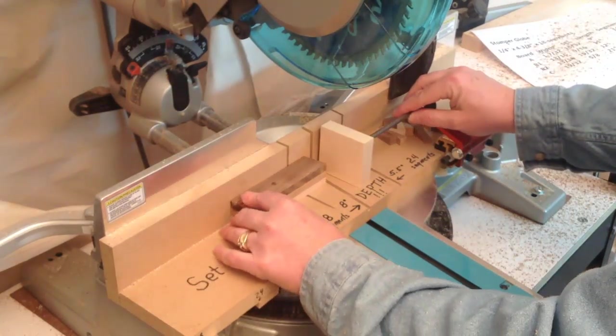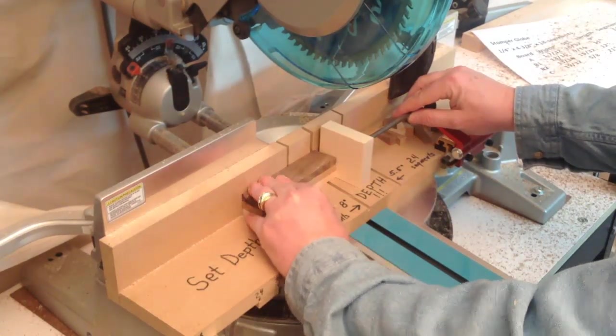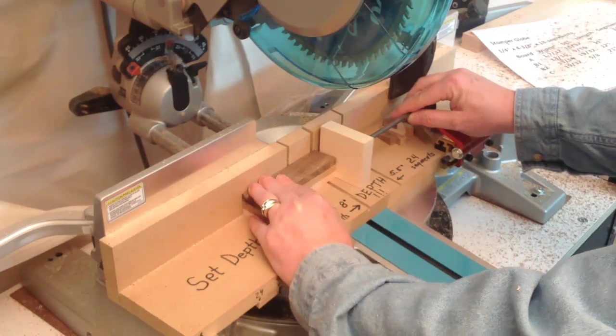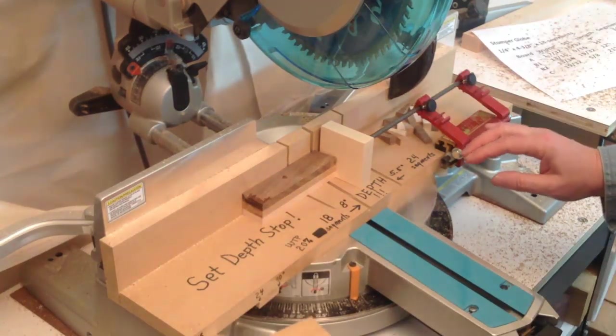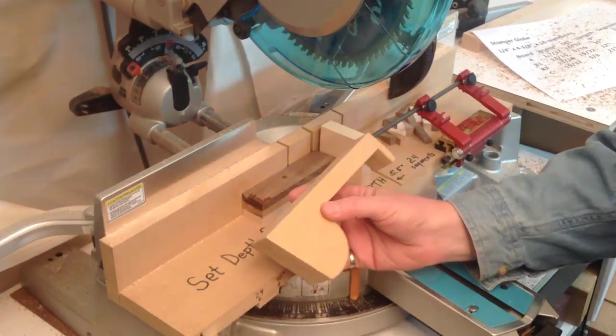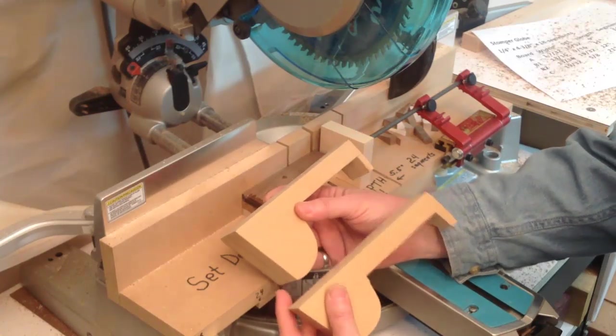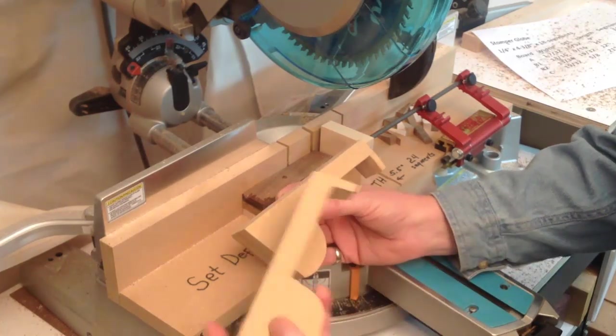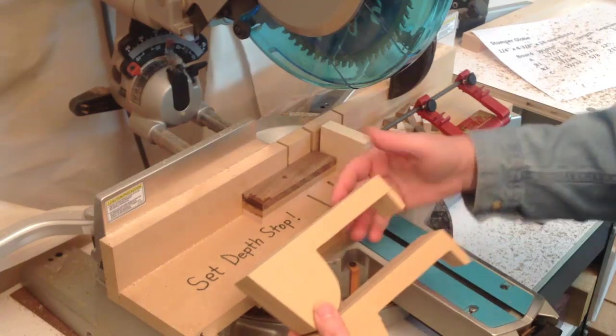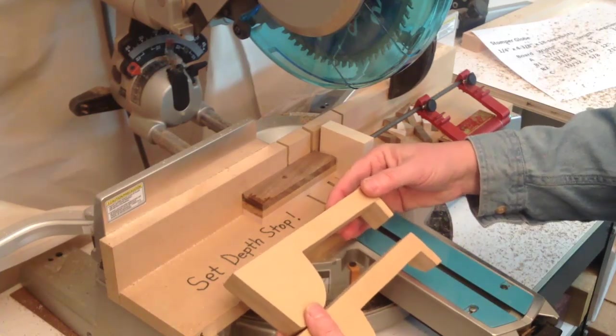When the board is getting short, and it's no longer safe to have your hand here, then it's time to use a hold-down device. And I've got two different hold-down devices that are identical, except this one is taller than this one. And I got this design from my good friend Malcolm Tibbetts.